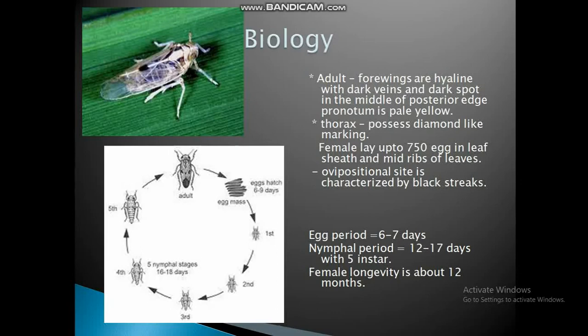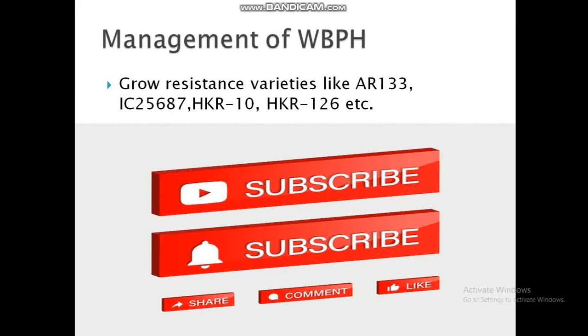Female lays up to 750 eggs in the leaf sheath and midrib of leaves. The oviposition site is characterized by a black streak. Egg period is 6 to 7 days, nymph period 12 to 17 days with 5 instars. Female longevity is about 12 months.